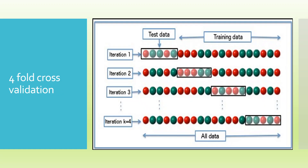You can see here how 4-fold cross-validation works. If our data set is this, then one portion is considered the testing data set and the rest is training data. In the second iteration, a different portion becomes the testing data and the remaining is training data. This repeats four times, which is why it is known as 4-fold cross-validation.